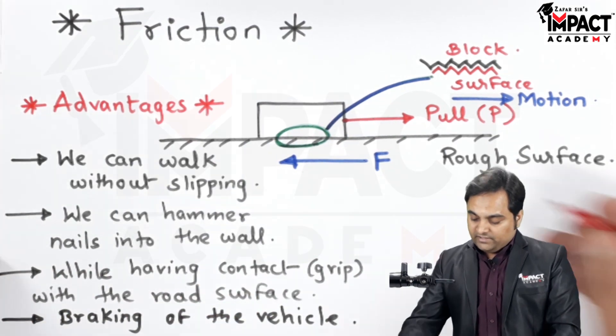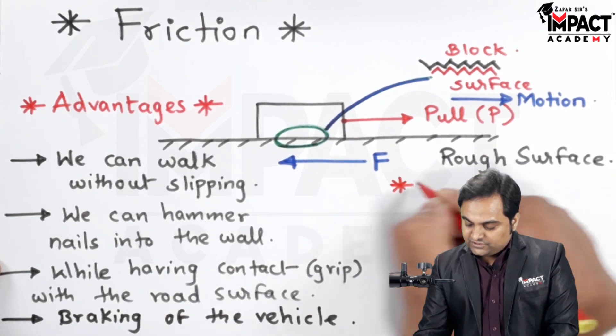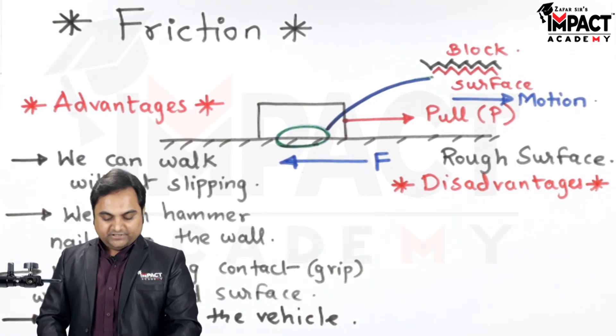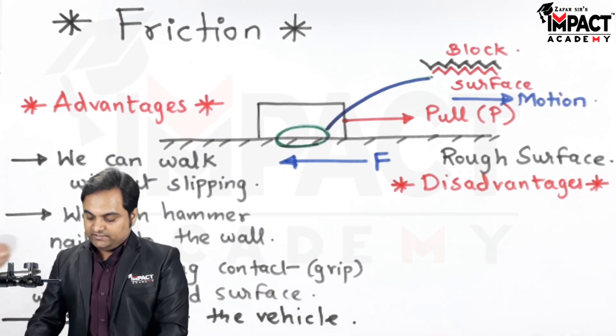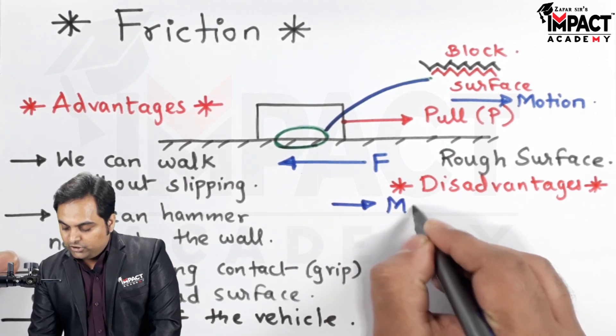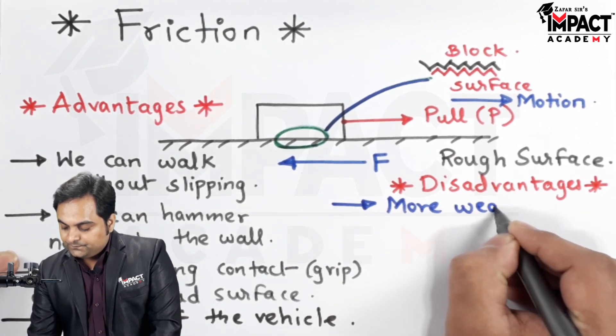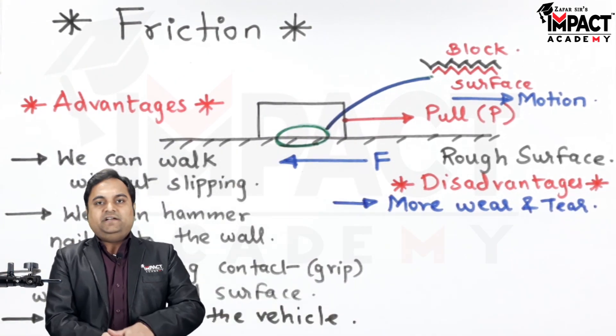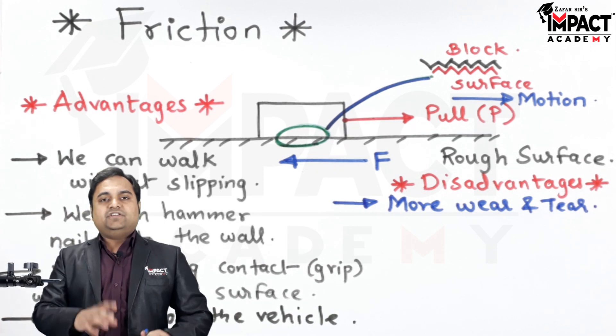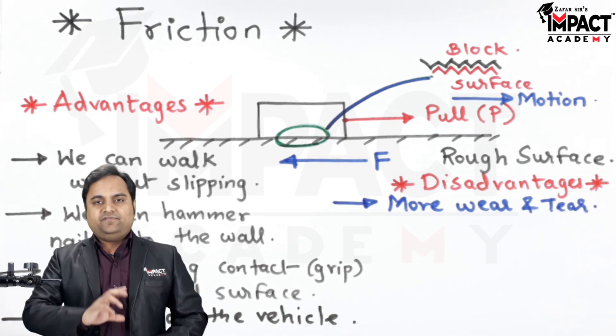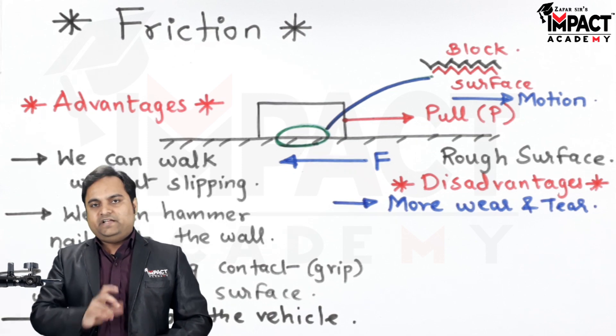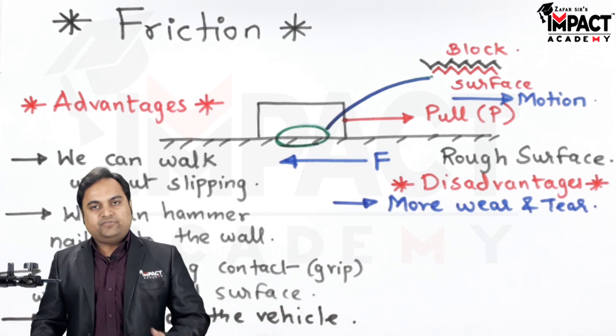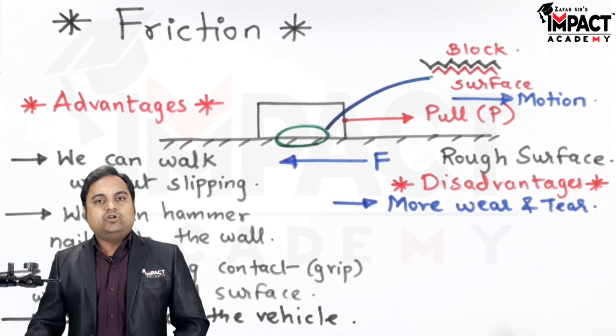Then there are many disadvantages of friction as well. One of the most common disadvantage of friction is that there is more wear and tear between the parts. Here I have shown an example of sliding friction. Friction can also be rolling. Sliding friction as compared to rolling is of greater amount so there will be more amount of wear and tear between the moving parts.